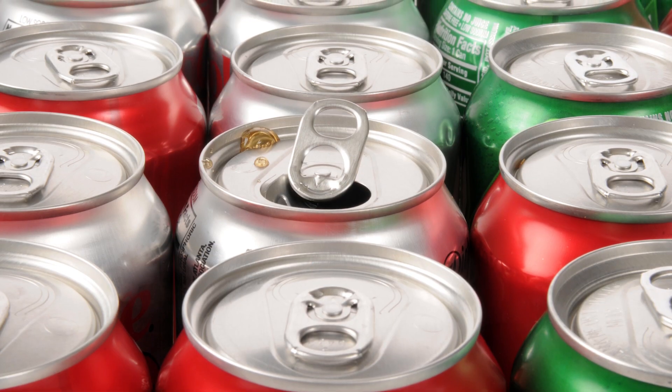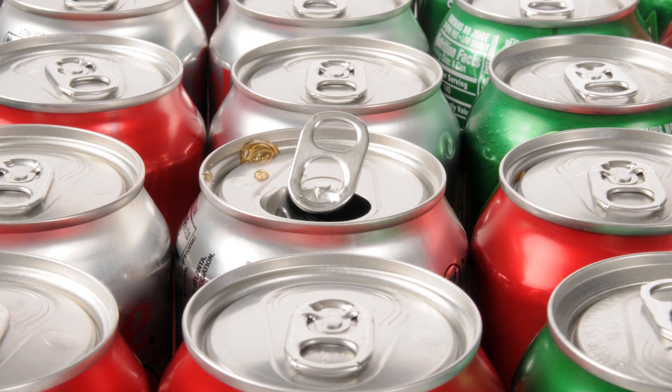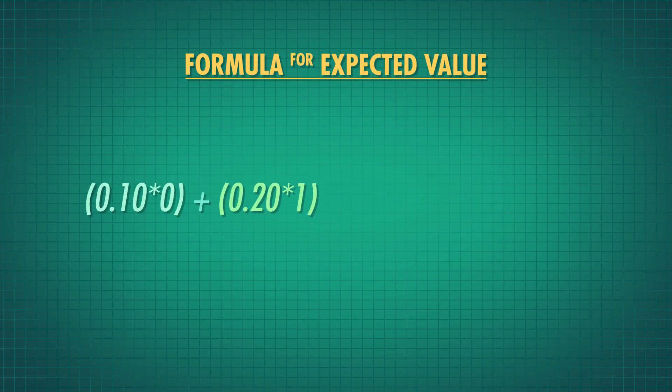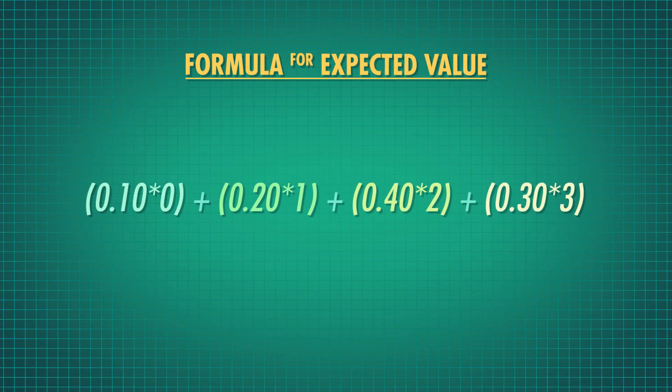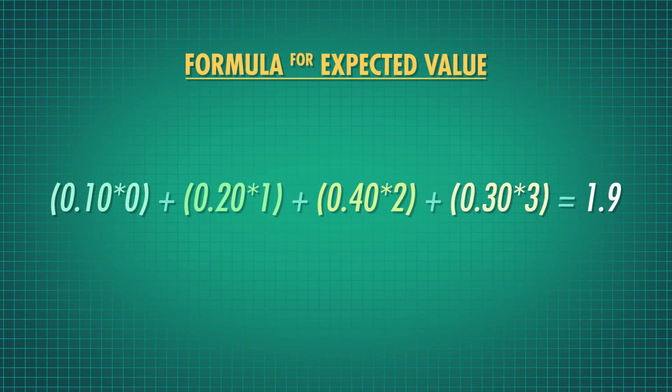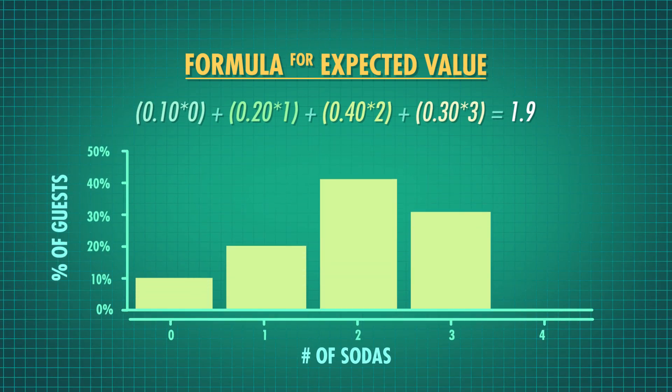With discrete distributions, where values can only take on set numbers like how many sodas people drink at a party, calculating the expectation looks similar to the mean formula. For simplicity's sake, let's say people will only take 0, 1, 2, or 3 sodas at your party, and you want to know how much soda to expect a person will drink so you can get enough — because nothing kills a party like running out of soda. For each possible value, multiply it by the relative frequency for that value and add all these products together. So if 10% drink 0 sodas, 20% drink 1, 40% drink 2, and 30% drink 3, we get an expected value of 1.9 sodas, meaning you should buy about 2 sodas per guest. This is the expected value of the distribution, and we can apply it to any number of guests we want.